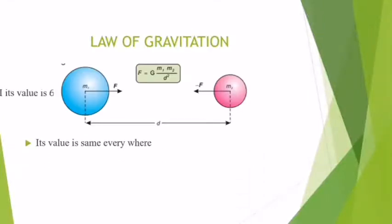Its value is same everywhere. And in System International, its value is 6.673 into 10 power minus 11 newton meter square per kg square.